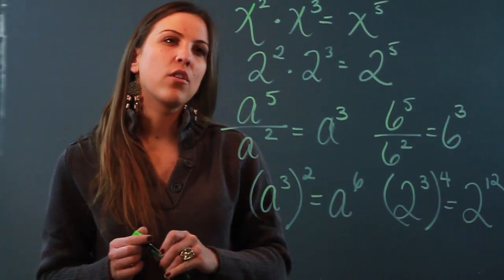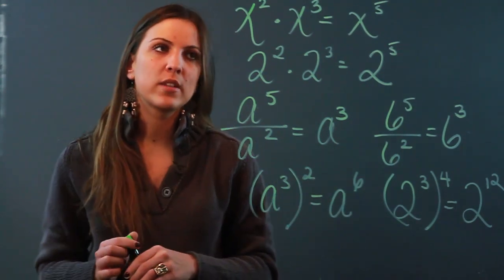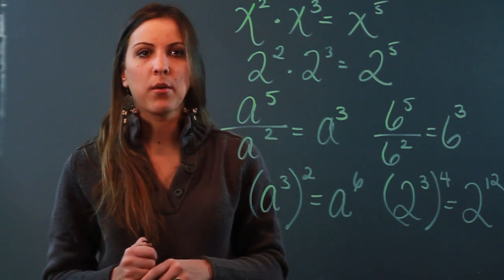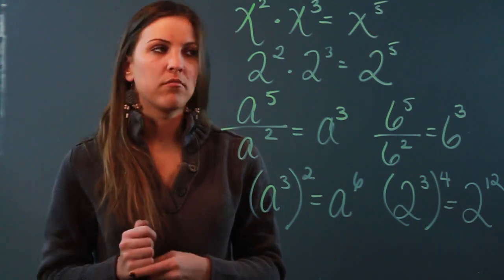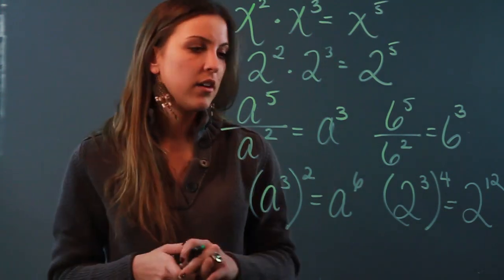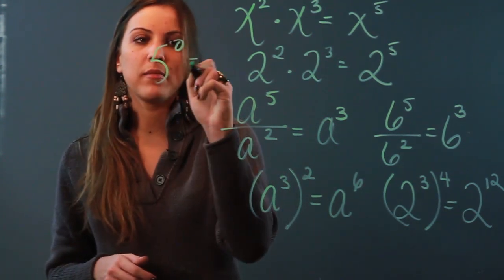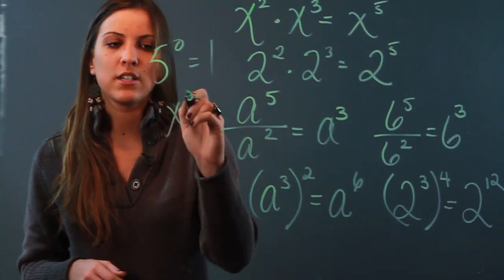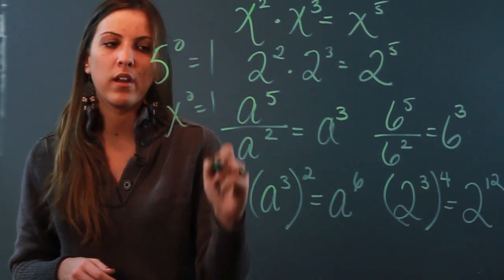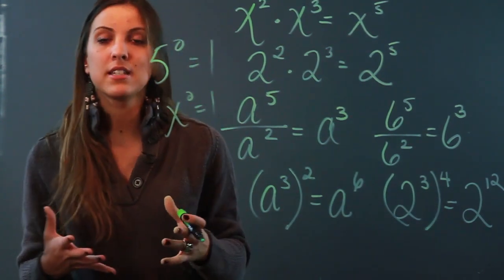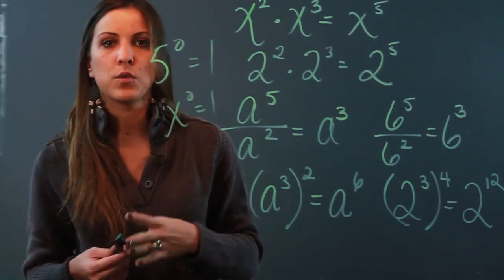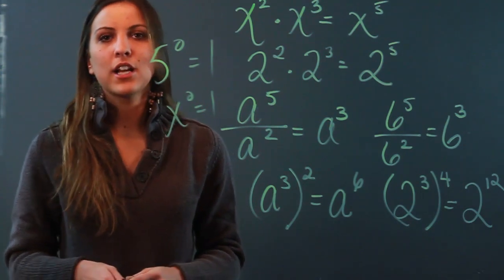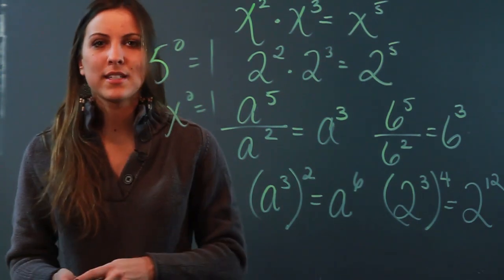The other law you should know is that anything to the zero power is one. So five to the zero power is one, x to the zero power is one, a million to the zero power is one. So those are your basic laws of exponents.